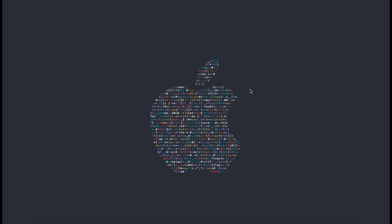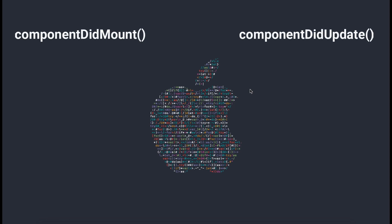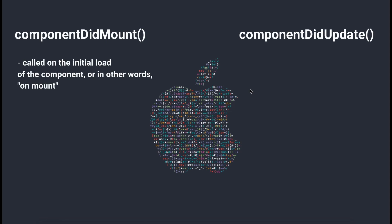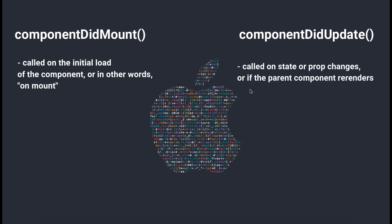If you were originally working with React classes, you may have heard of componentDidMount and componentDidUpdate. ComponentDidMount is a lifecycle function called after the component has mounted. ComponentDidUpdate is called when something like state or props have been updated. Think of useEffect as a combination of those two lifecycle functions.